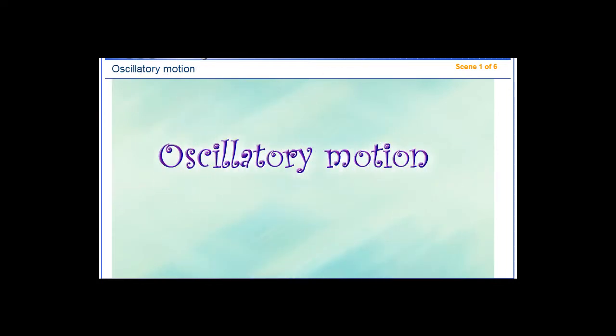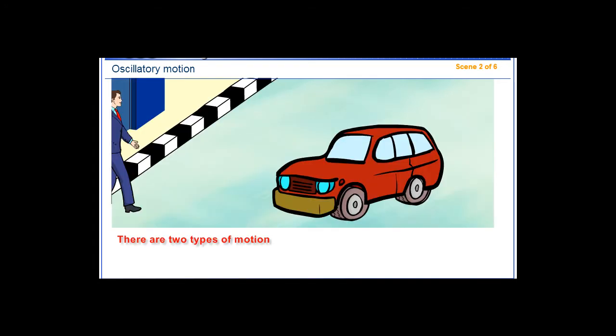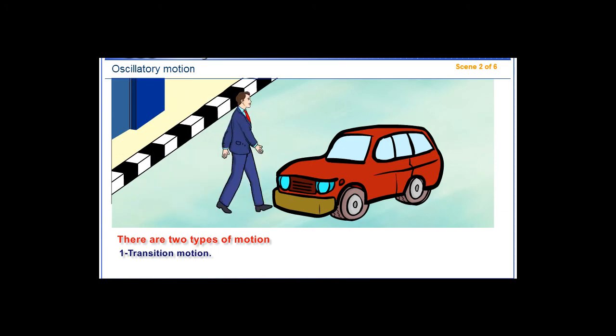Oscillatory motion. There are two types of motion: 1. Transition motion.